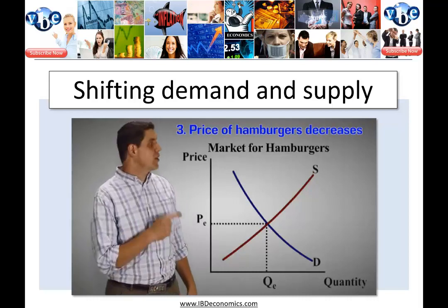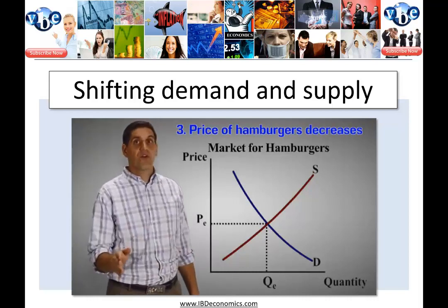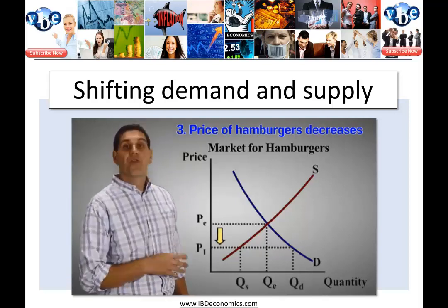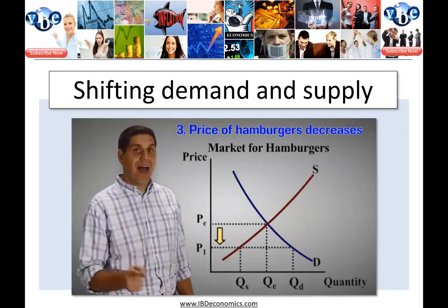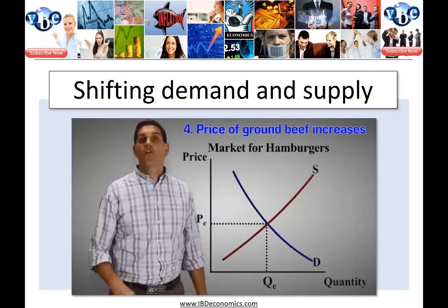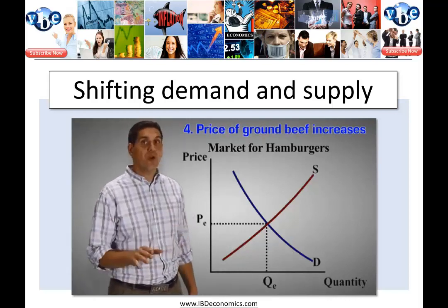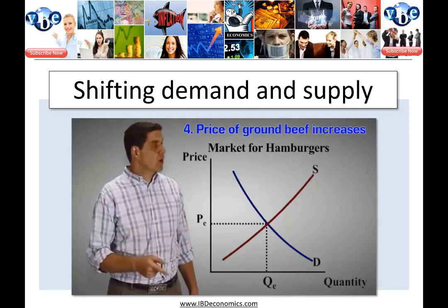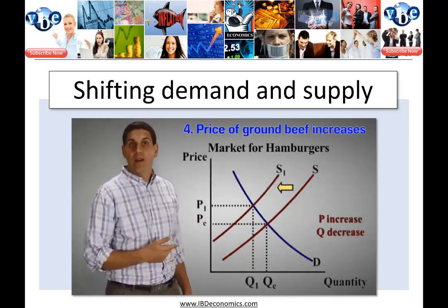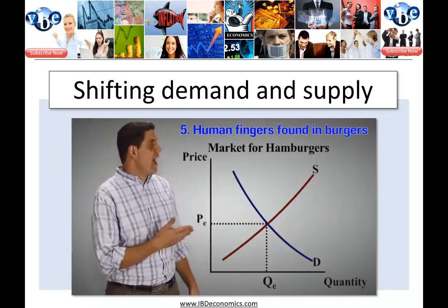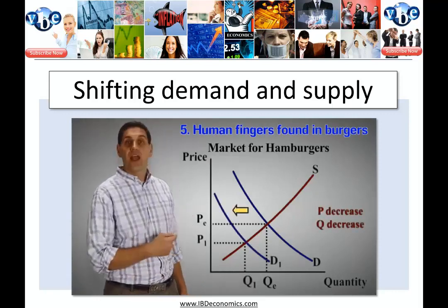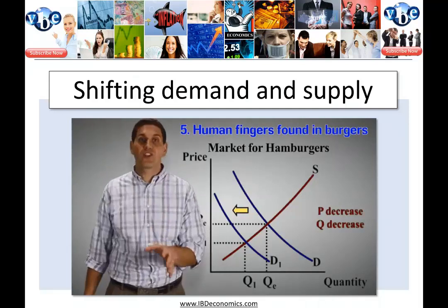For number three, if the price of hamburgers decreases, that's not going to shift the curve. A change in price does not shift the curve — it moves along the curve. So if the price goes down, the quantity demanded is going to increase, the quantity supplied is going to decrease, and that's going to lead to a shortage. Price never shifts the curve. For number four, if the price of ground beef — a key resource in the production of hamburgers — increases, that means we're going to produce less hamburgers. So the supply will shift to the left, price will go up, and quantity will go down. And for the last one, if there are human fingers found in many restaurants, that's going to decrease the demand for hamburgers. So the demand shifts to the left, price goes down, and quantity goes down.